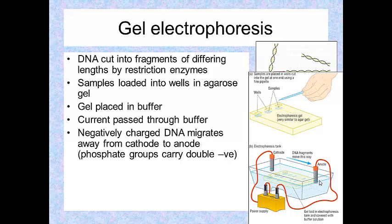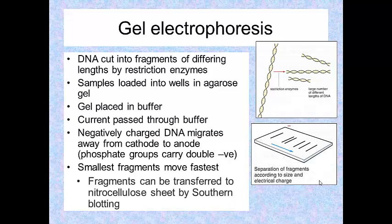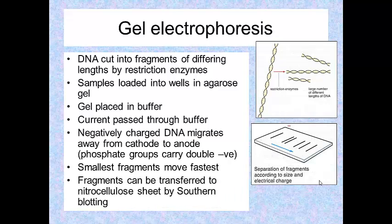Now, DNA is negatively charged. It's negatively charged because the phosphate groups carry a double negative charge and therefore the DNA will migrate away from the cathode towards the positively charged anode. Our small fragments move most quickly because they can wriggle their way around the individual fibres in this agarose gel.